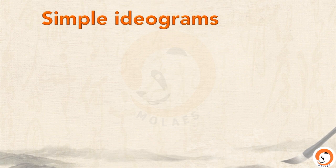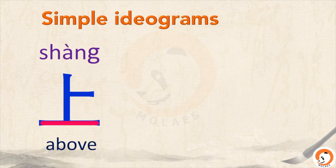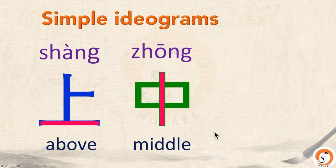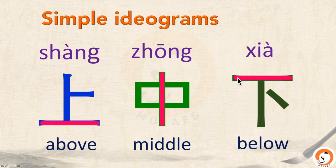There are two types of ideograms. The first one is simple, structured, and intuitive. Like this one: 上. If we refer this line as a surface, and this part is above — 上. 中 means middle; we can refer to this stroke as being in the center. 下: if we refer this to a surface, and the main part is below.